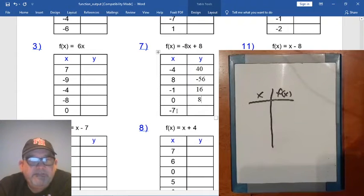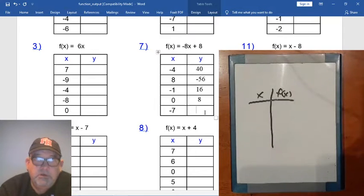And then, finally, negative 7. Negative 7 times negative 8 is positive 56, and 56 plus 8 more. I've got to get my thinking cap on. 64. Boom. Okay. Excellent.